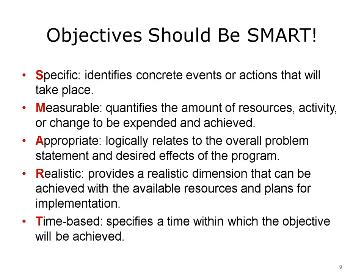These objectives are measurable. A stands for appropriate — if I wanted to affect diet and then talk about the foods people ate, that would be logically related. When we talk about dietary changes, we'll often talk about energy gain, which has two components: what did you consume and how much did you exercise. R stands for realistic — can I really expect to change the behavior in question? Dietary changes can be very difficult, and the community may not have the necessary infrastructure to support change, so you need to make sure that your goals are realistic and that you have the resources to achieve them.